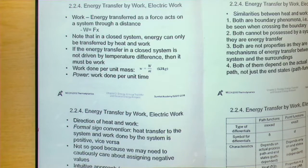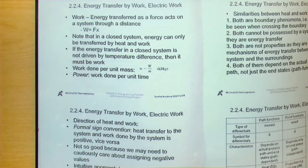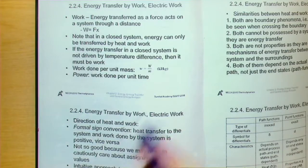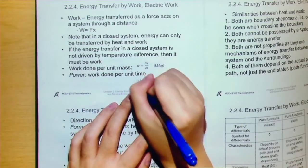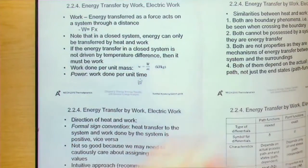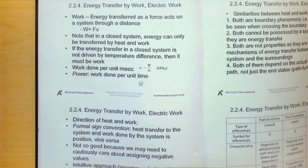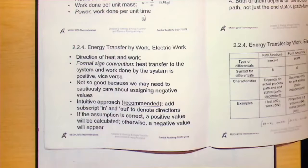For power, that will be the work done per unit time. We denote that by W with a dot at the top of the symbol — W-dot — and that represents power.